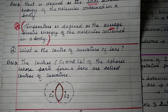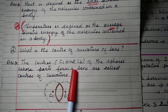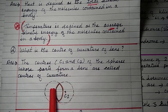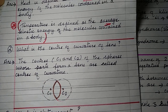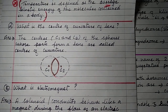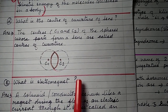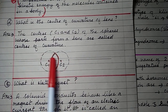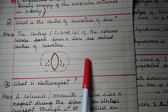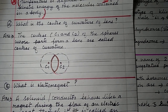The centers C₁ and C₂ of the two spheres whose parts form a lens are called centers of curvature. The line passing through the centers of curvature of the two spheres is called the principal axis.